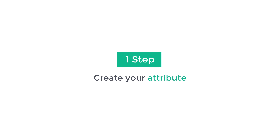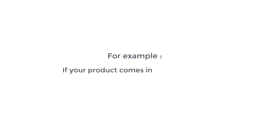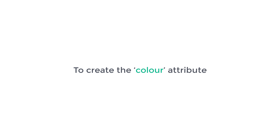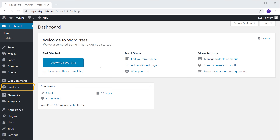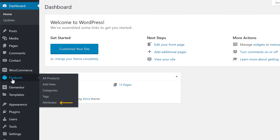We are going to create our variable product in just four steps. The first step is to create your attributes. Attributes are the differences which you have on your product. For example, if your product comes in different colors, you need to create an attribute called color. So to create the color attribute, let's go to our WordPress dashboard, then go to products and click attributes.